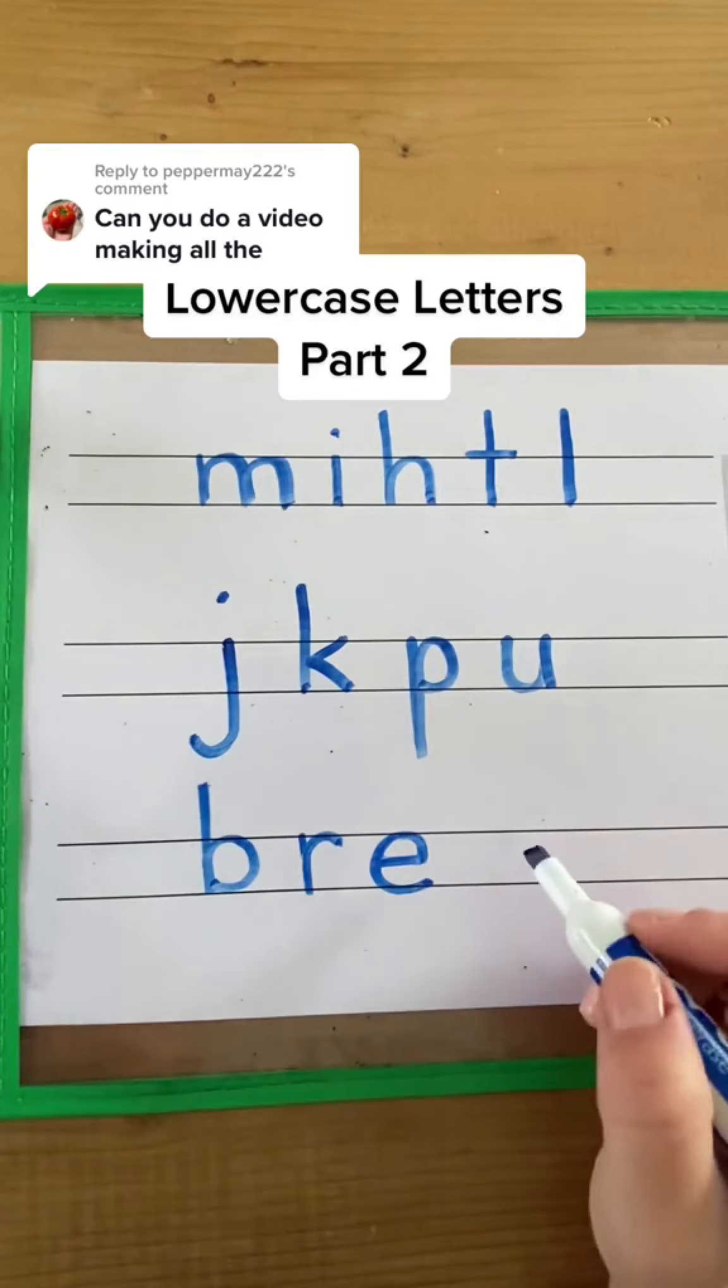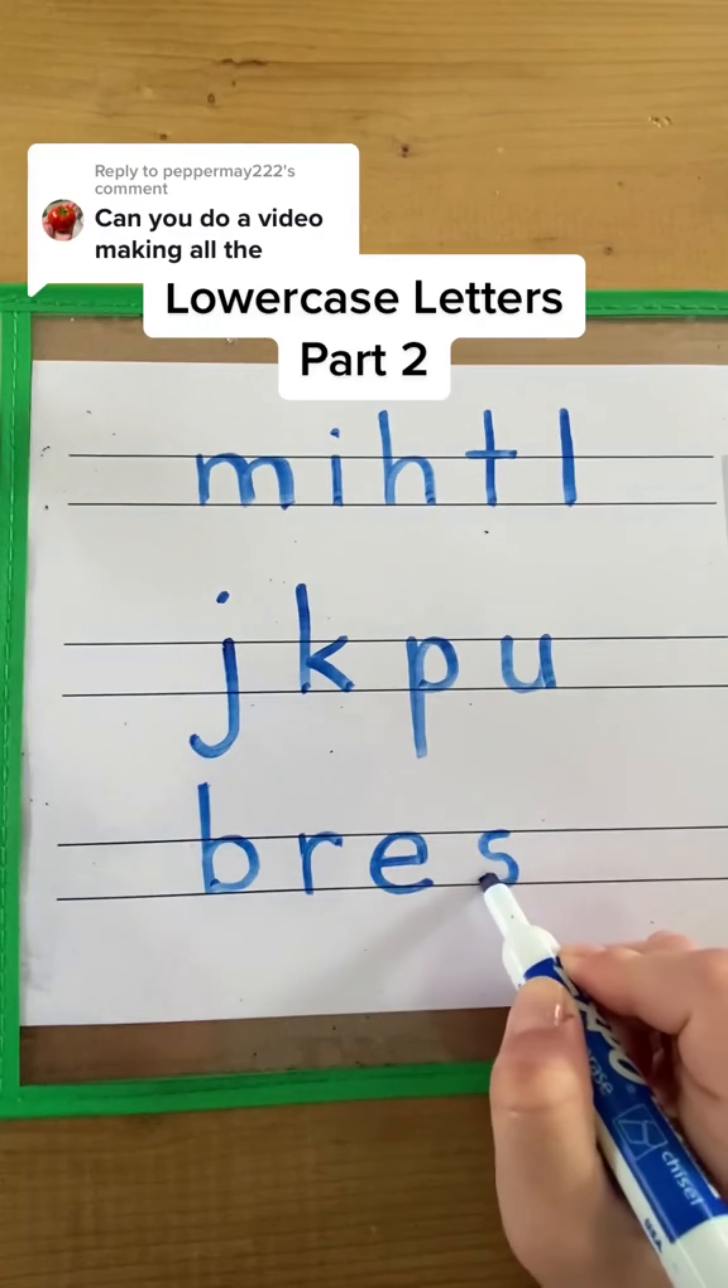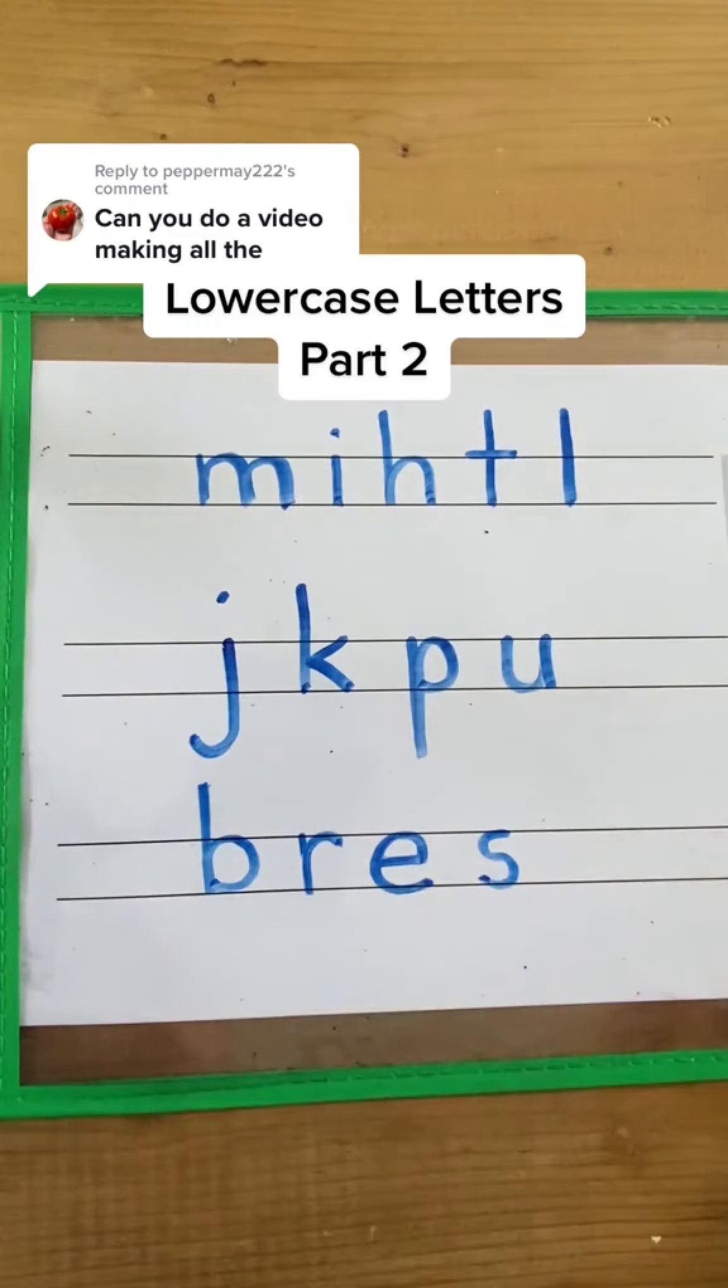And the next letter is S. This is a magic C letter in that it's a little magic C and then curve around the other way. Follow for part three.